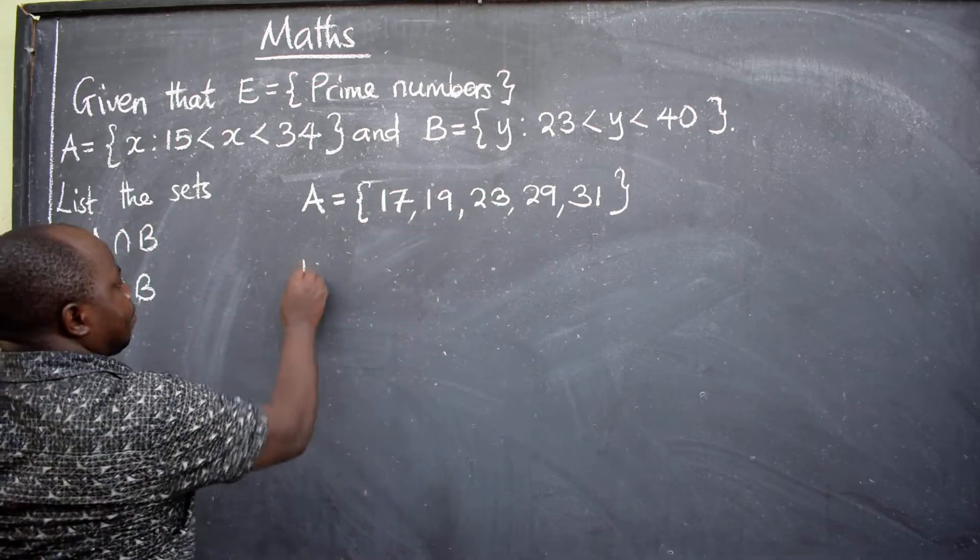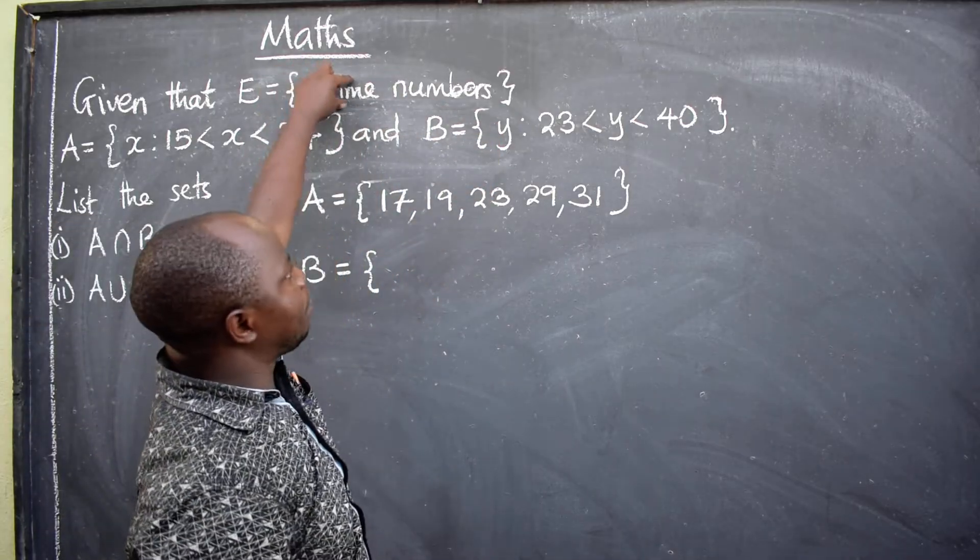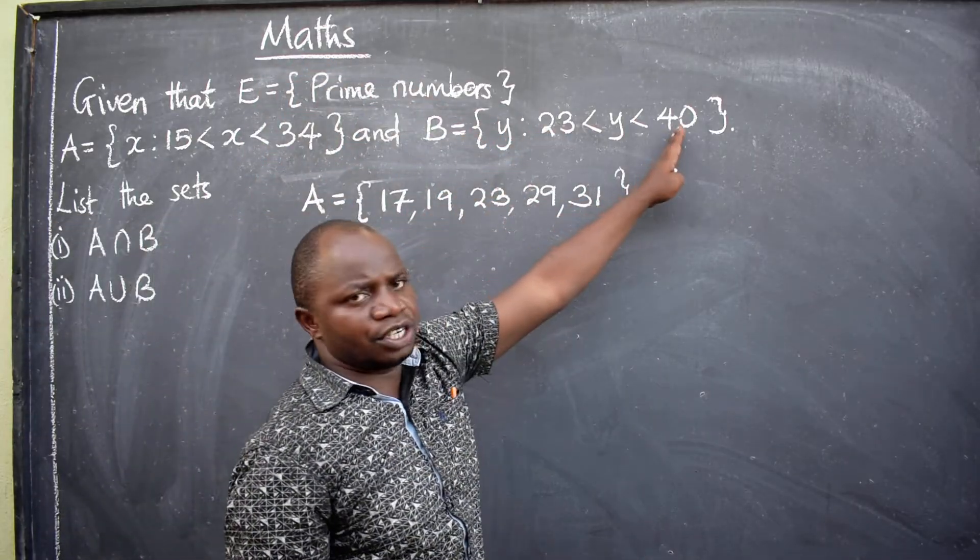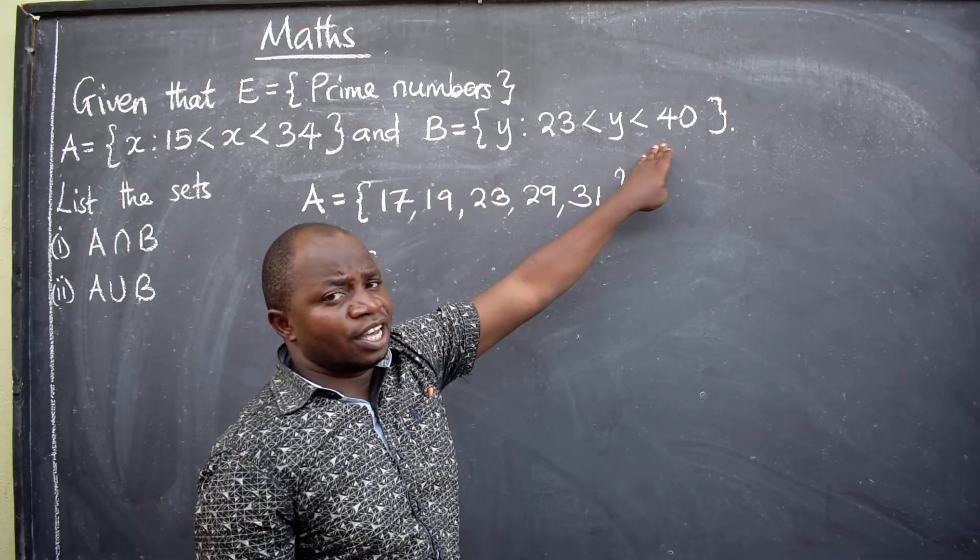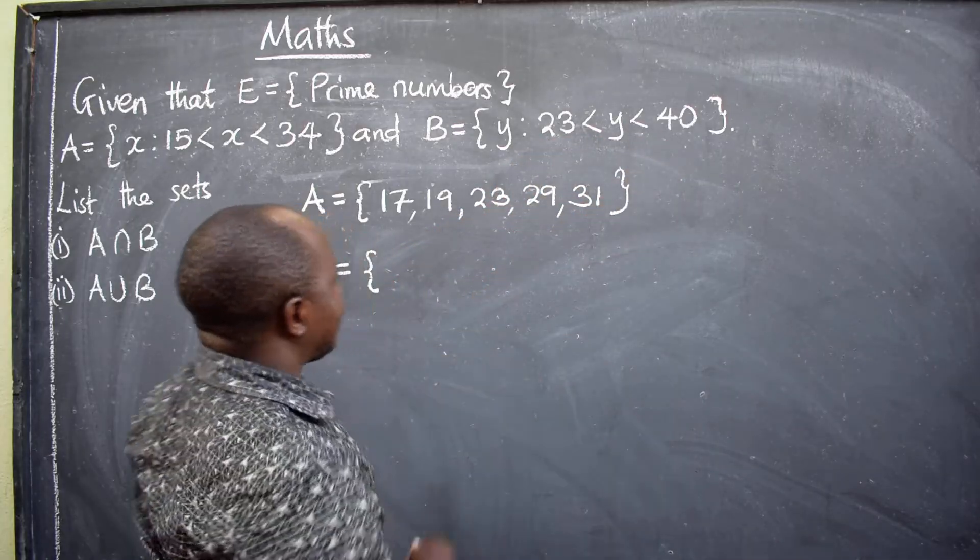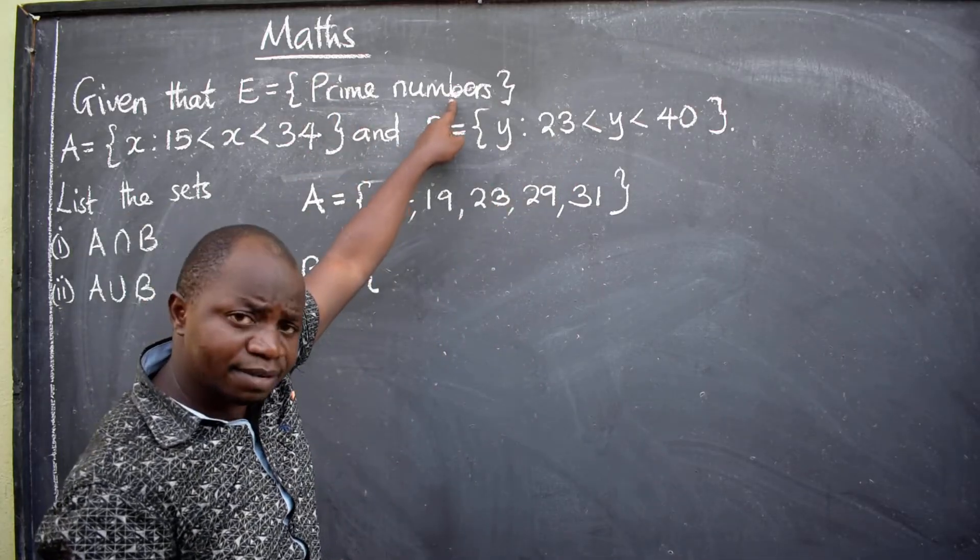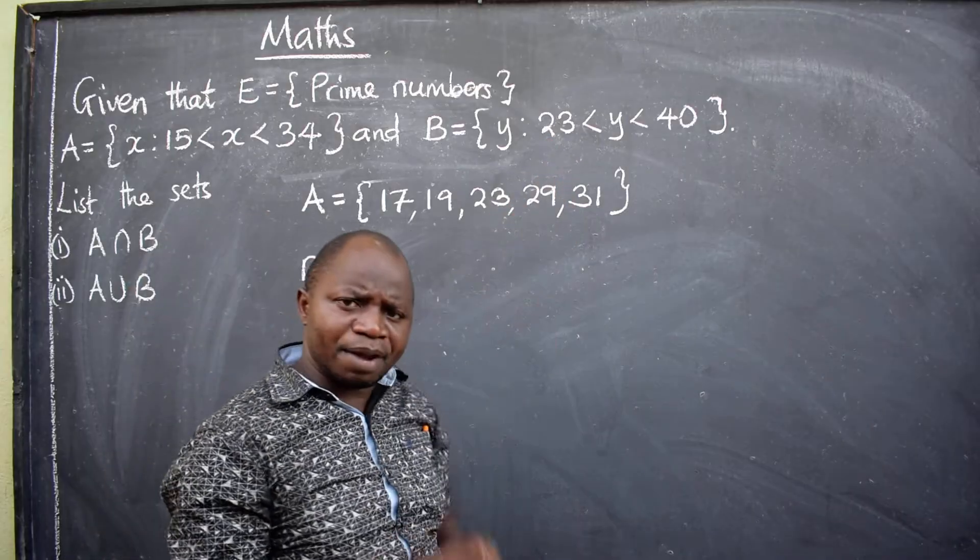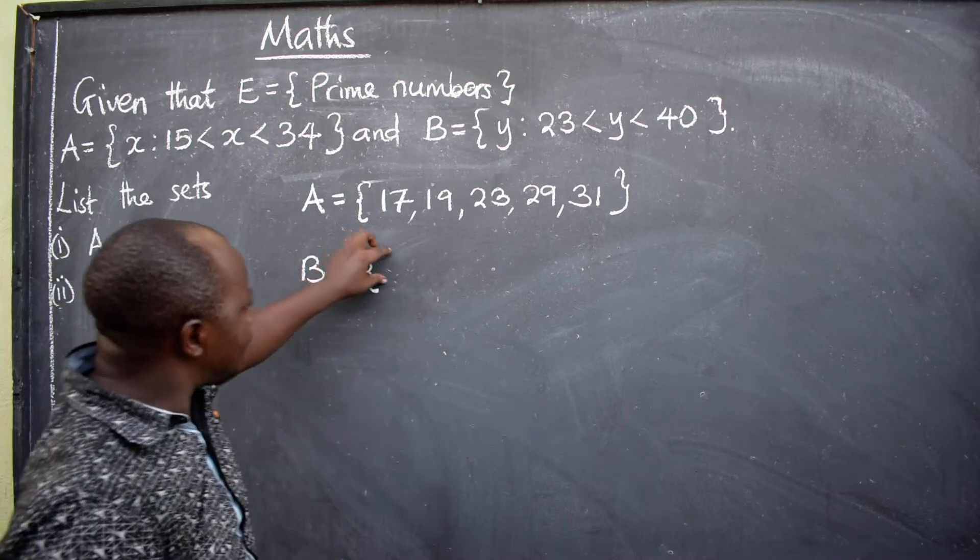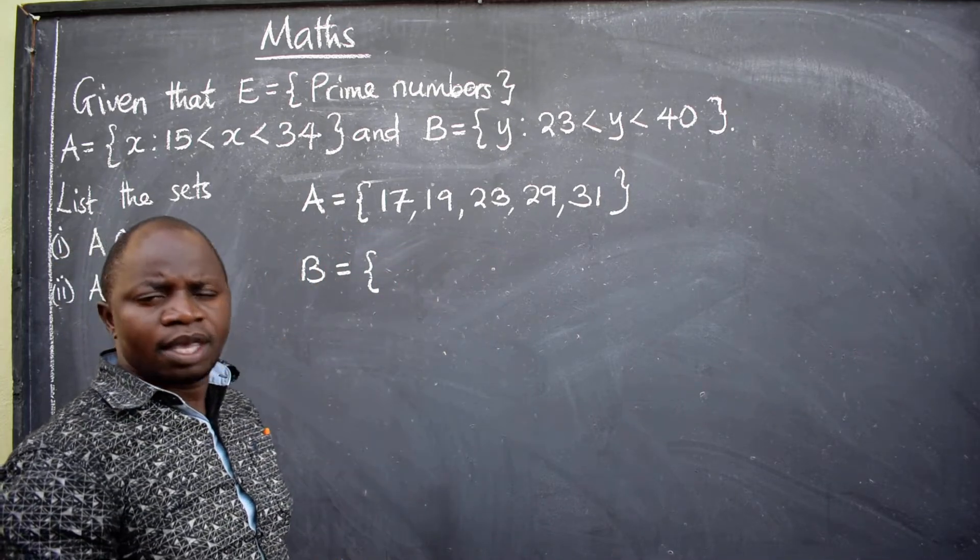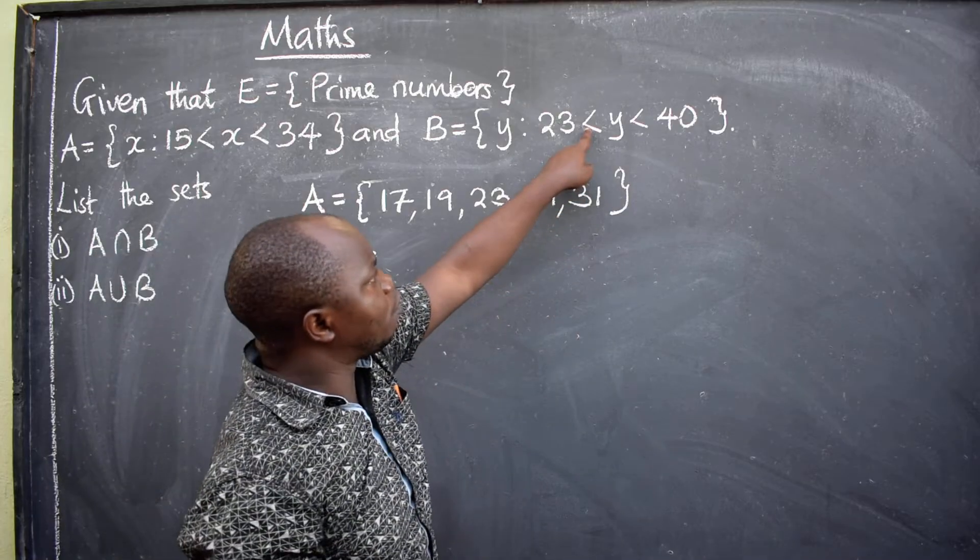We come to B. B is equal to... Here, we are again interested in prime numbers within this range. Now, in B, you will notice that 23 is a prime number. Agreed? Yes, 23 is a prime number. But, will 23 be part of the solution? Or will 23 be part of set B? The answer is no. Why? You follow the symbol.